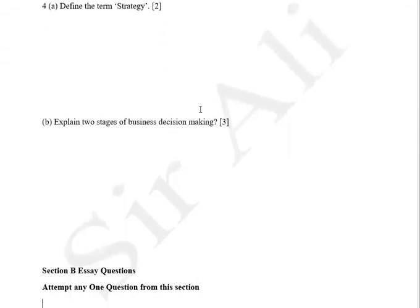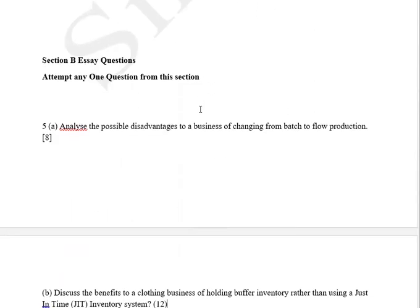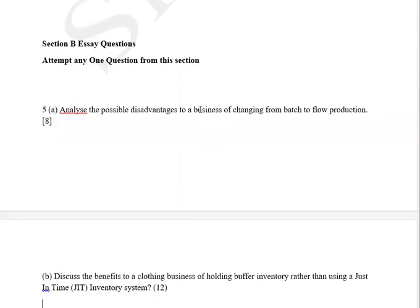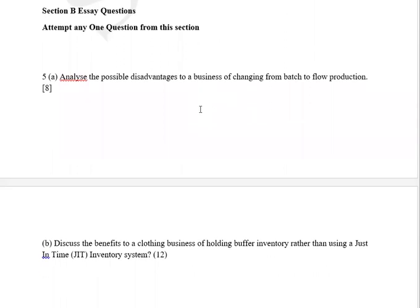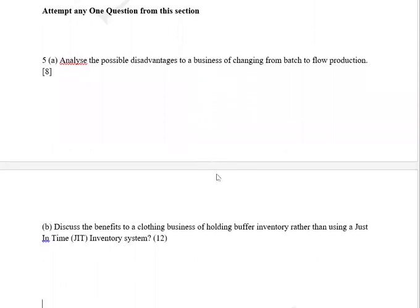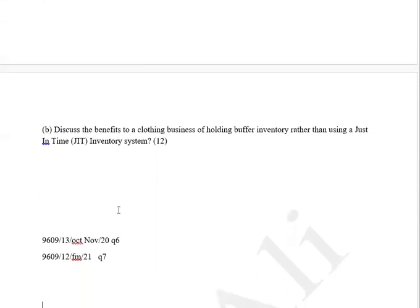Question number four: define the term strategy, two stages of business decision making. Now in the large part, I would say that one question might be on batch or flow production, and one question related to the just-in-time inventory system.